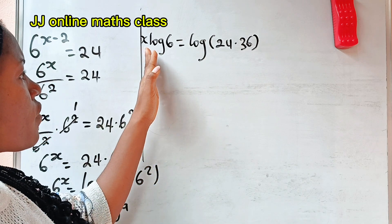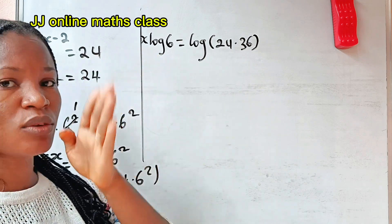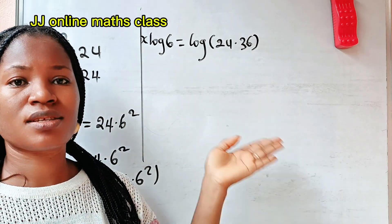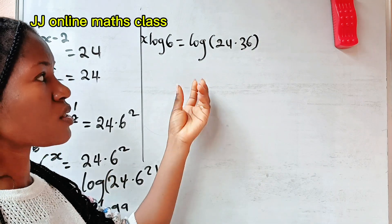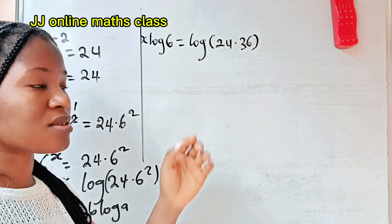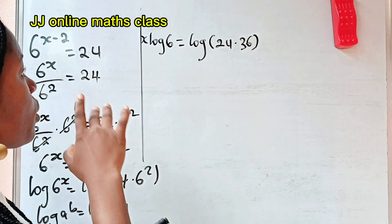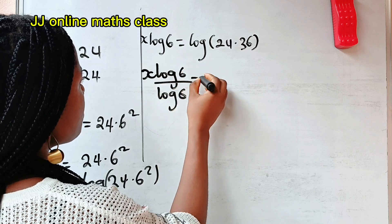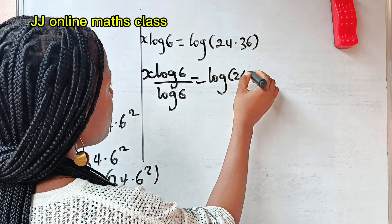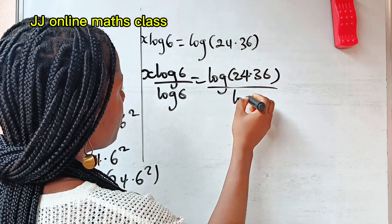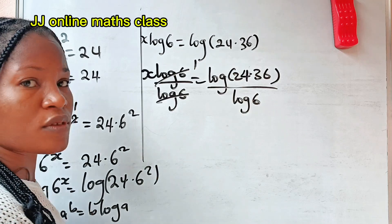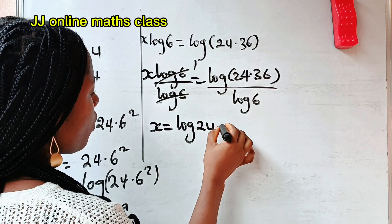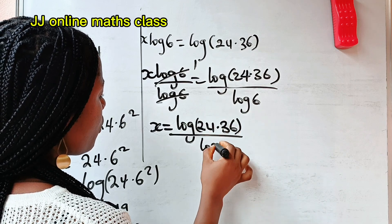Now, to get the value of x, we need to divide both sides of this equation by log 6. So we have x log 6 divided by log 6 is equal to log of 24 multiplied by 36, divided by log 6. Log 6 divides itself to give us 1, so x is equal to log of 24 multiplied by 36 divided by log 6.